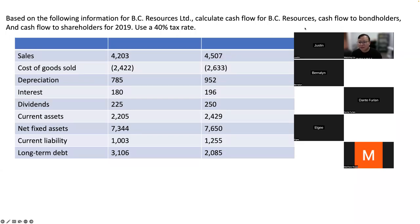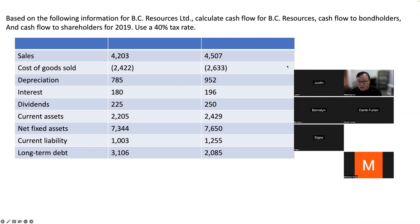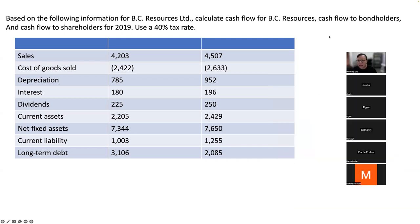This is a textbook question about BC Resources Ltd. We need to calculate the cash flow for the company, the cash flow to the bondholders (creditors), and the cash flow to the shareholders (equity holders), using a 40% tax rate.